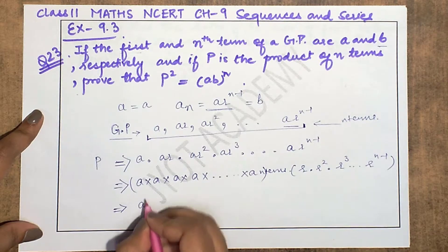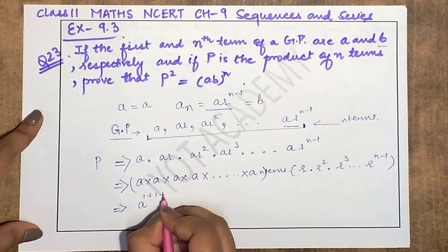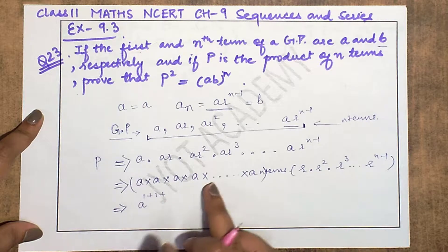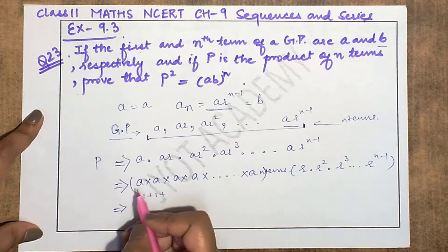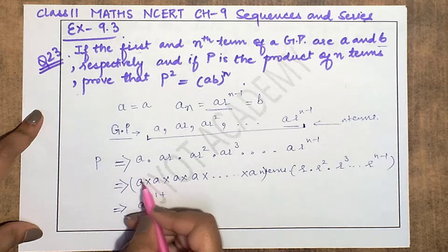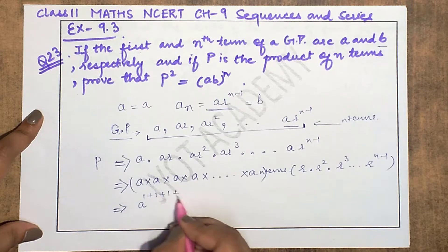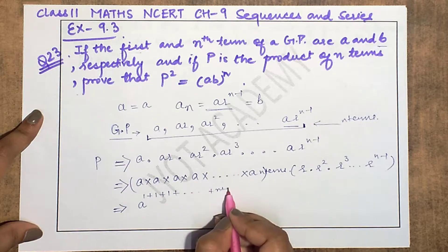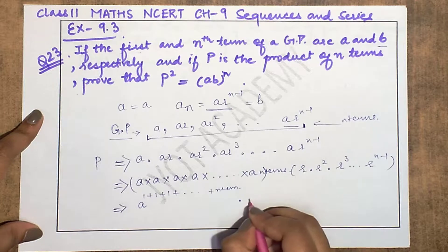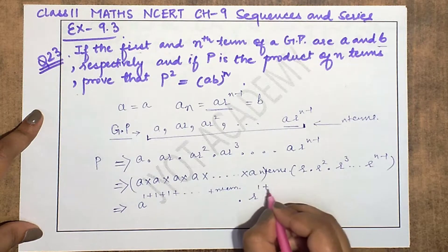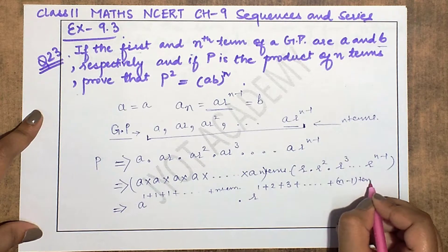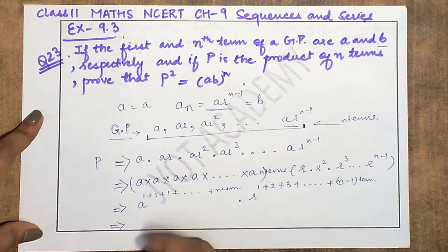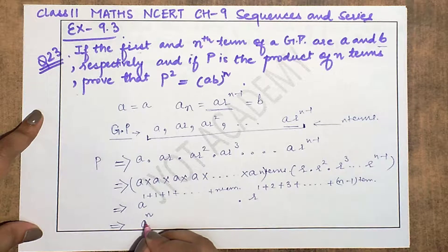Since the base is the same, powers get added. For a, the power is 1+1+1... up to n terms, giving a^n. Similarly, for r we combine the powers: 1 appears n times, giving 1×n = n, so we get a^n here. And r has powers 1+2+... up to (n-1) terms.